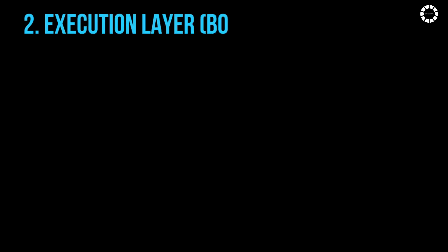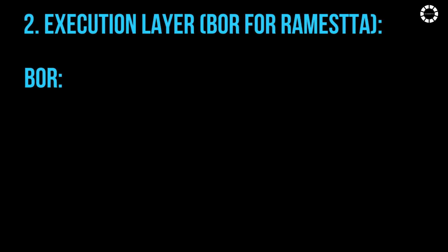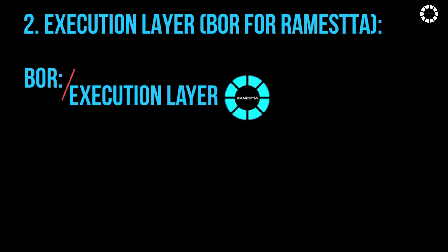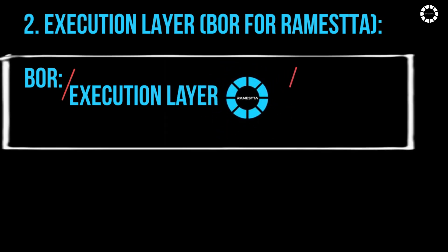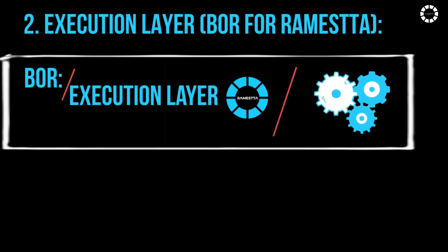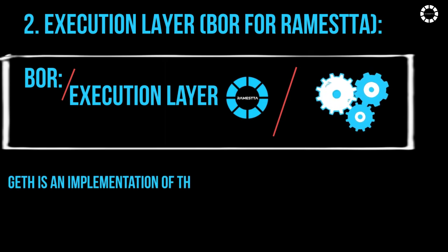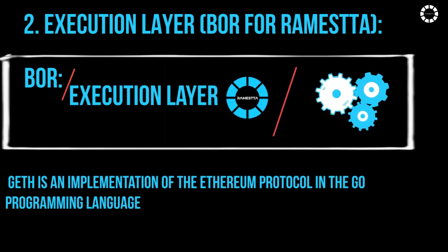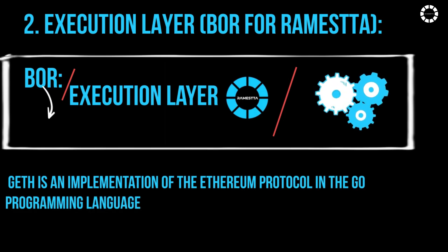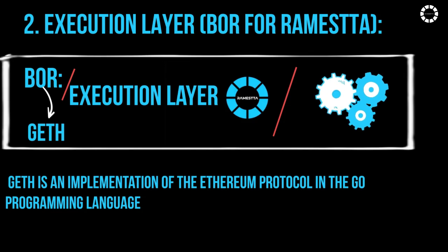Execution Layer — Bohr for Romesta: Bohr is the name of the execution layer implemented for the Romesta blockchain. It is a crucial component of the blockchain protocol, responsible for executing smart contracts and processing transactions. Geth is an implementation of the Ethereum protocol in the Go programming language. Bohr is based on Geth, meaning it utilizes similar principles and functionalities.